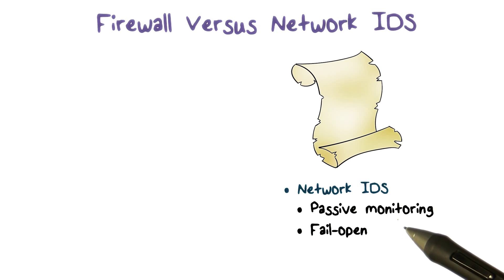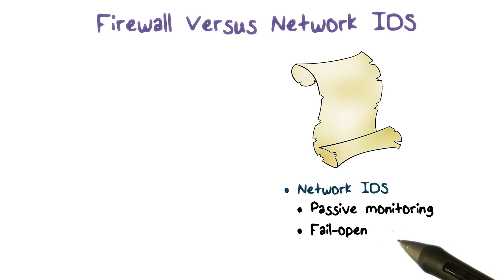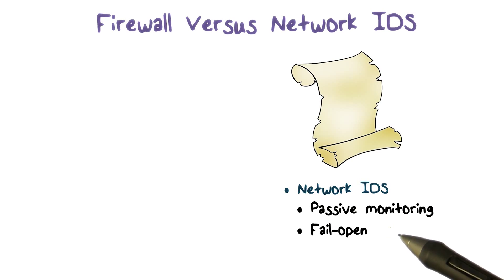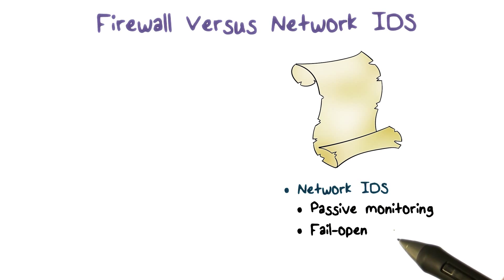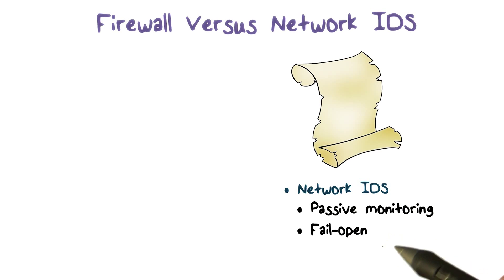When an IDS is overloaded, it cannot detect intrusion in a timely manner. That is, it fails to adequately protect the network. We call this situation 'fail open,' meaning that when the IDS fails, the network is open to intrusions.